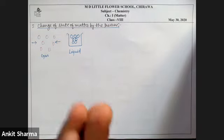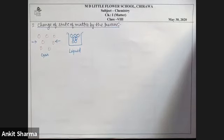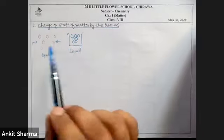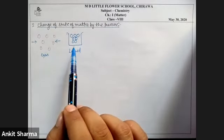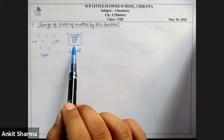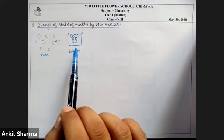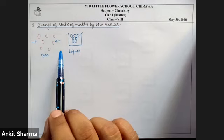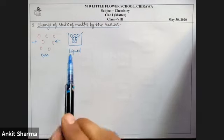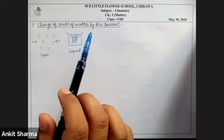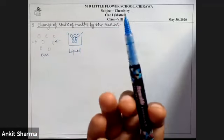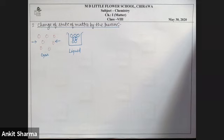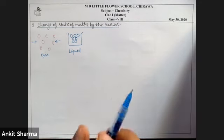Pressure is also an important factor for change in the state of matter. A gas can be changed into liquid, and then into solid as well — by cooling it, or by increasing its pressure further. Thus we can obtain liquid nitrogen, liquid oxygen, liquid hydrogen, liquid carbon dioxide, and liquid cooking gas (LPG).